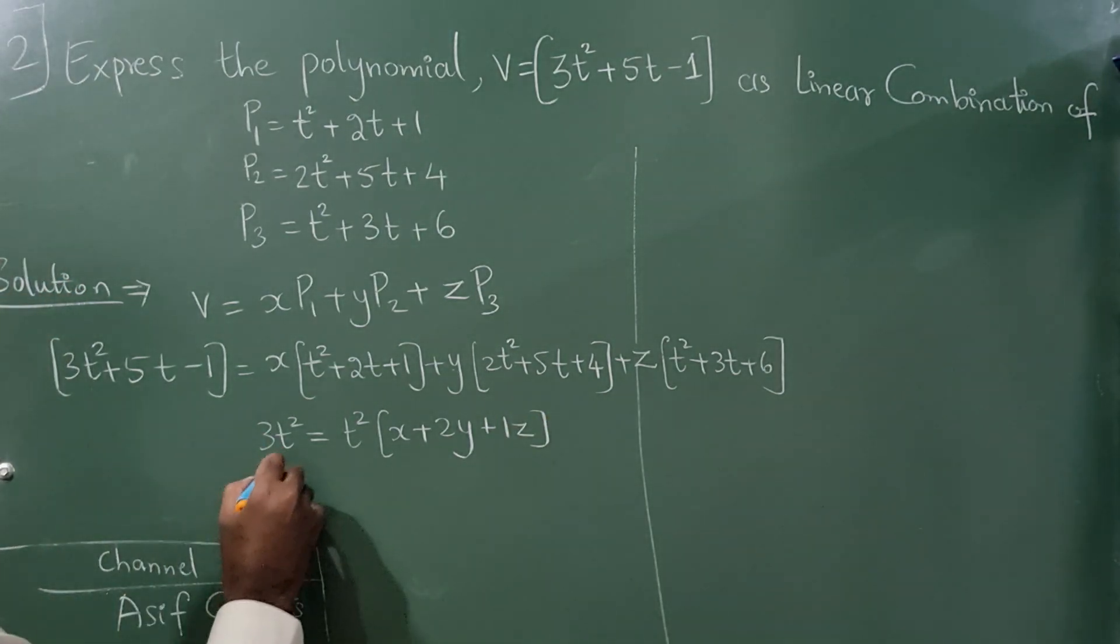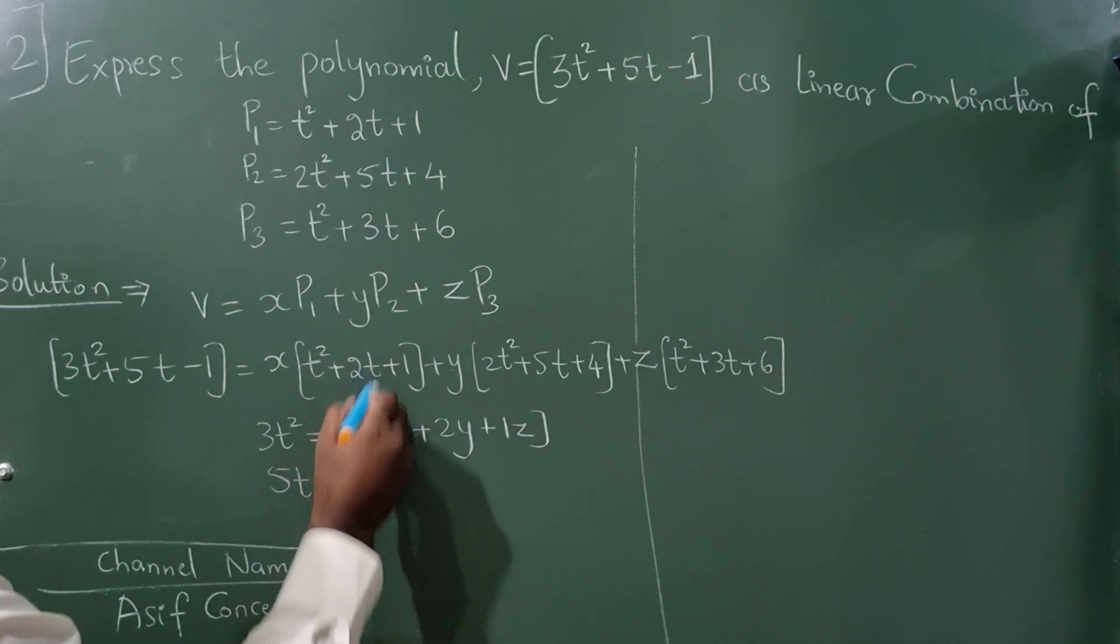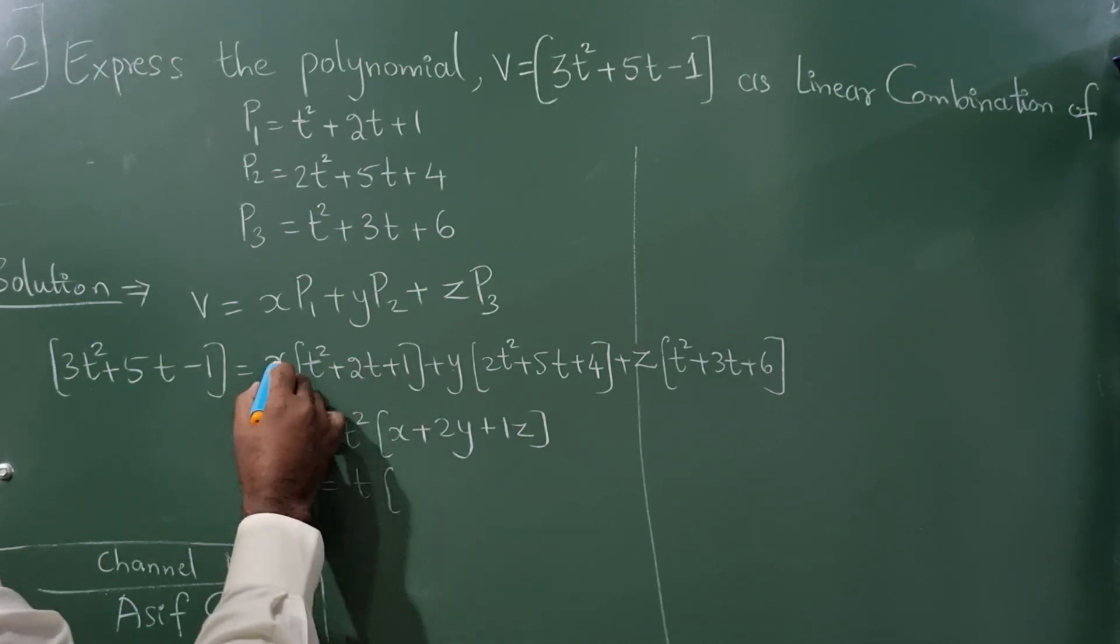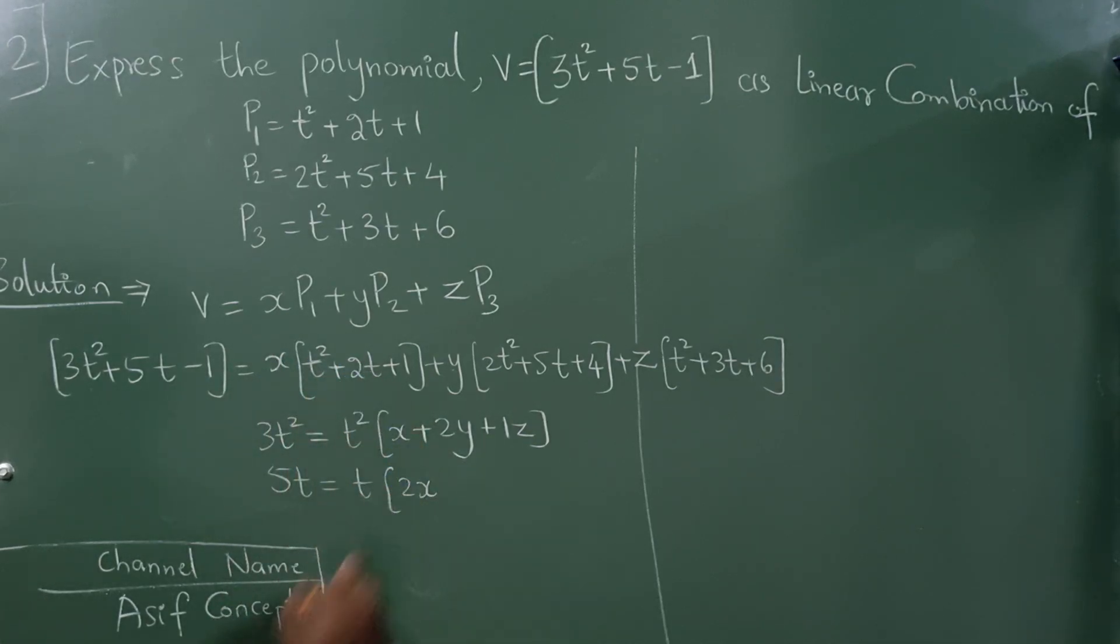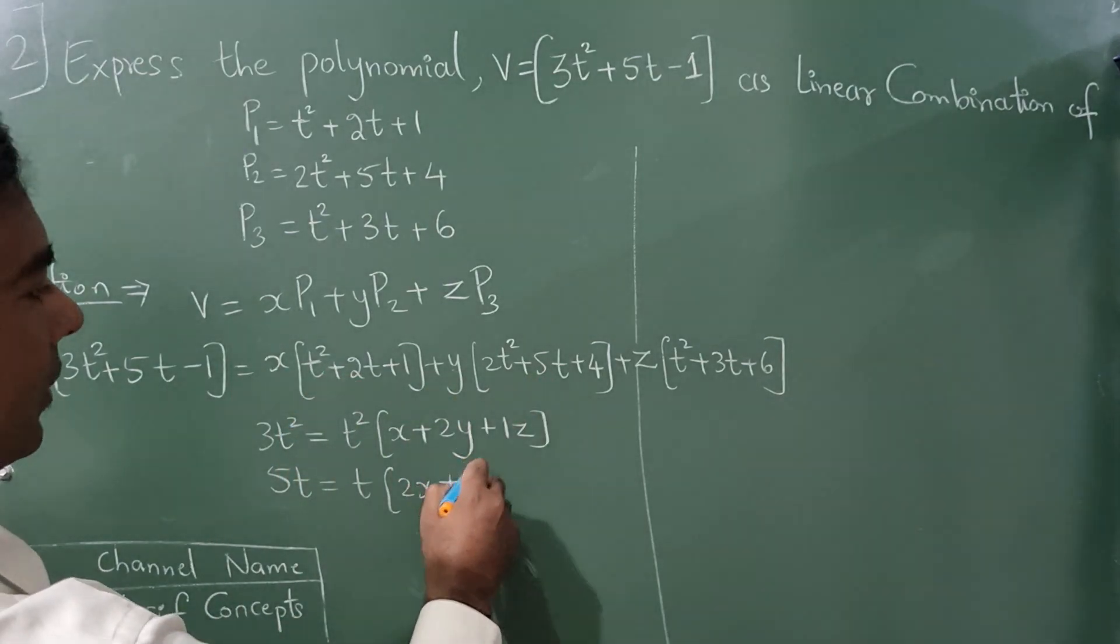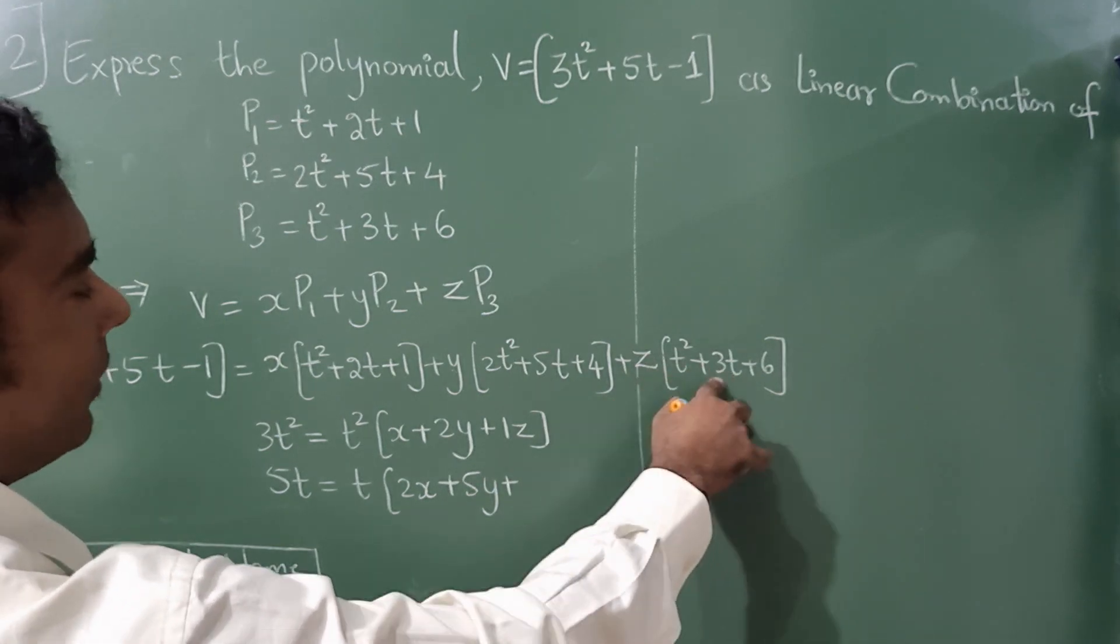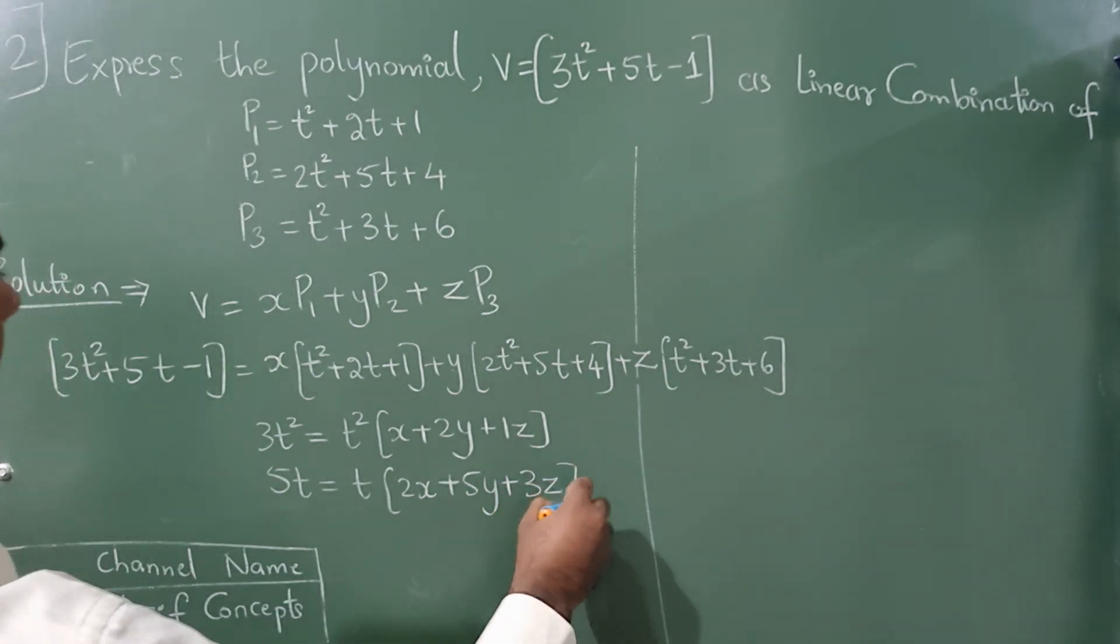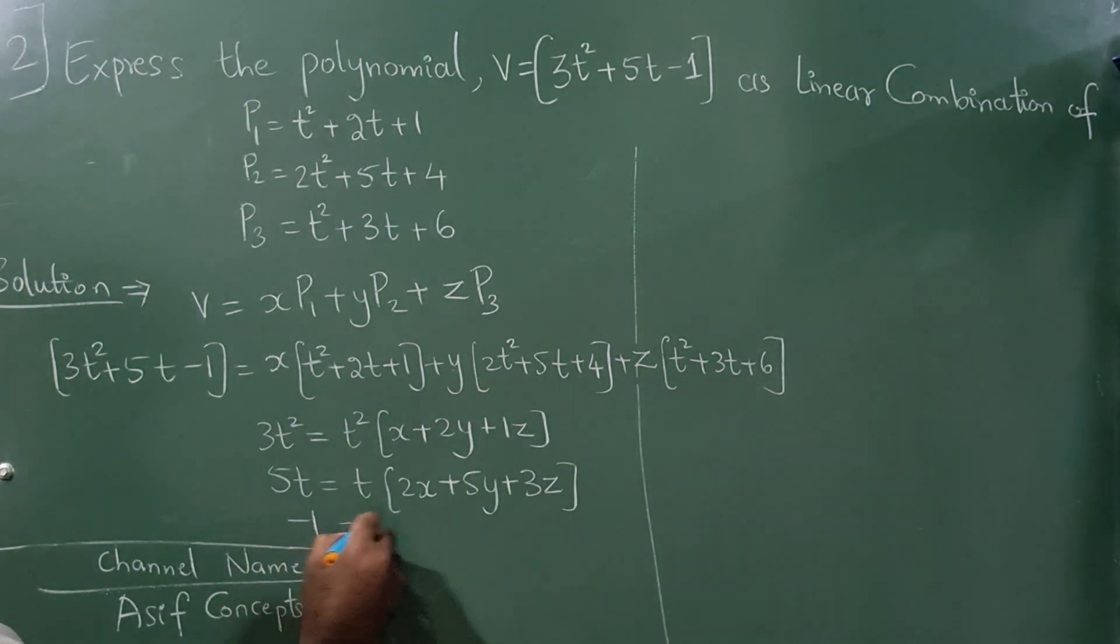Next 5t. So t is here. So the coefficient will be 2x from here plus 5y plus 3z and last one is minus 1.